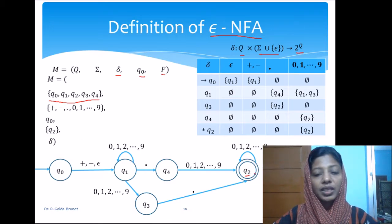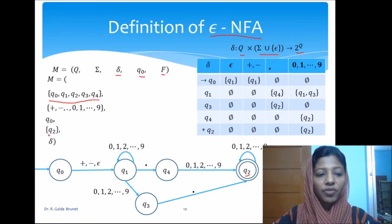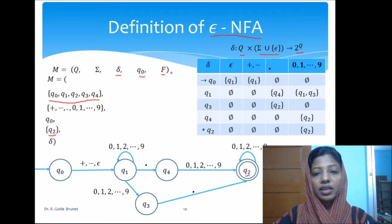Here we have only one final state but it is not necessary that we have to restrict the final state to be only one state. It is a finite set of final states or the accepting states and then we have the delta which is given here.